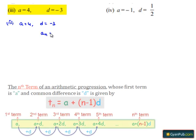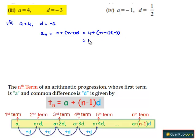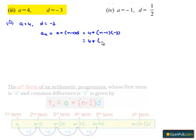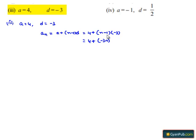Let us find the nth term, that is aₙ equals a plus (n minus 1) into d, which is equal to 4 plus (n minus 1) into minus 3. That equals 4 plus minus 3 times n is minus 3n, and here minus 1 into minus 3 is plus 3, that is equal to 7 minus 3n.